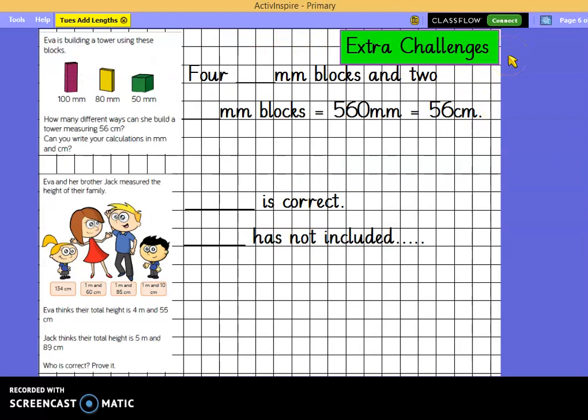Here are your extra challenges for today. Eva is building a tower using these blocks. A bit like we did earlier. If you notice, they're all in millimetres. How many different ways can she build a tower that will measure 56cm altogether? Notice this is centimetres. Can you see that I've changed the centimetres into millimetres here to help you? Can you write your calculations in millimetres and in centimetres? I've given you an example of how you could record that. Have a go.